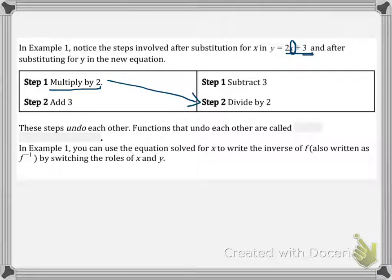And so notice that the other operation, the opposite operation, we subtracted by 3. So notice what these steps do. More than anything, we want to know, or we want to notice that these steps undo each other. Functions that undo each other are called inverse functions.